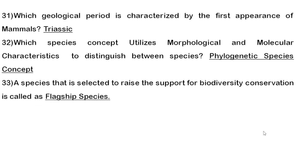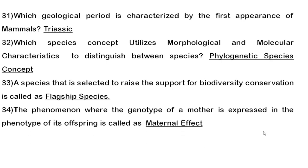Thirty-third question: the species selected to rally support for biodiversity conservation is called the flagship species. You also need to know about the umbrella species and examples of plant species used in conservation contexts.